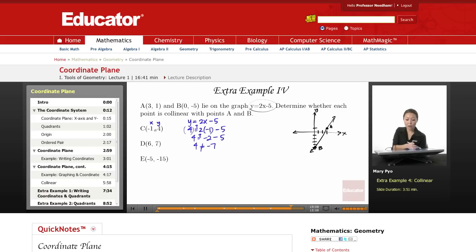So this point does not lie on this line. So that means point C is not collinear. This is no.